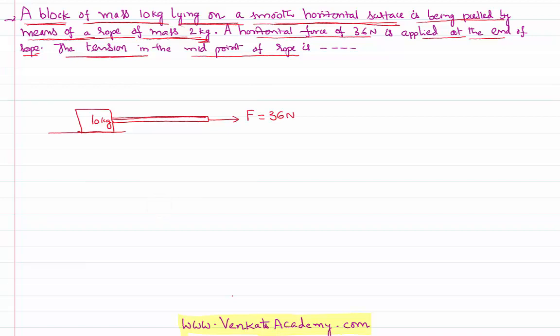We need to calculate the tension in the rope at the midpoint of the rope. So, being totally 2 kilograms rope mass, this will be 1 kilogram. Being the midpoint, this will be one more kilogram.